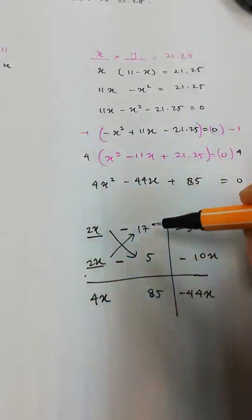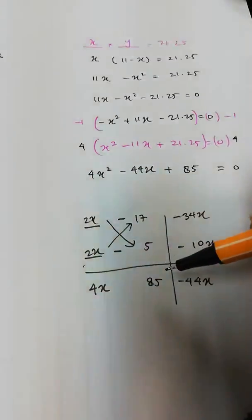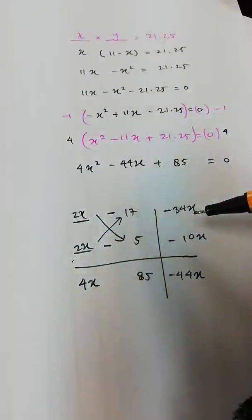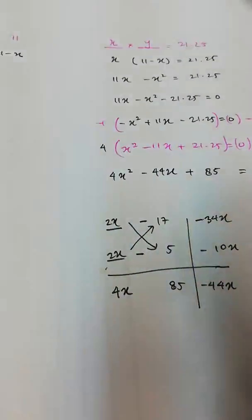So let's cross check. 2x times 2x is 4x squared. Negative 7 times negative 5 is positive 85. Negative 34x plus negative 10x is negative 44x.